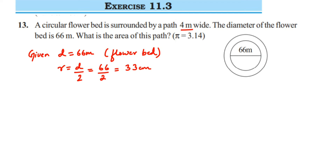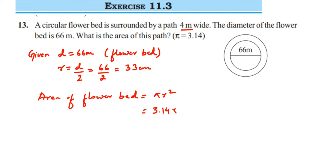The area of the flower bed equals pi r squared. Pi is 3.14, and r is 33 meters, so 33 squared equals 1089. Multiplying 1089 by 3.14 gives us 3419.46 square meters — this is the area of the flower bed.